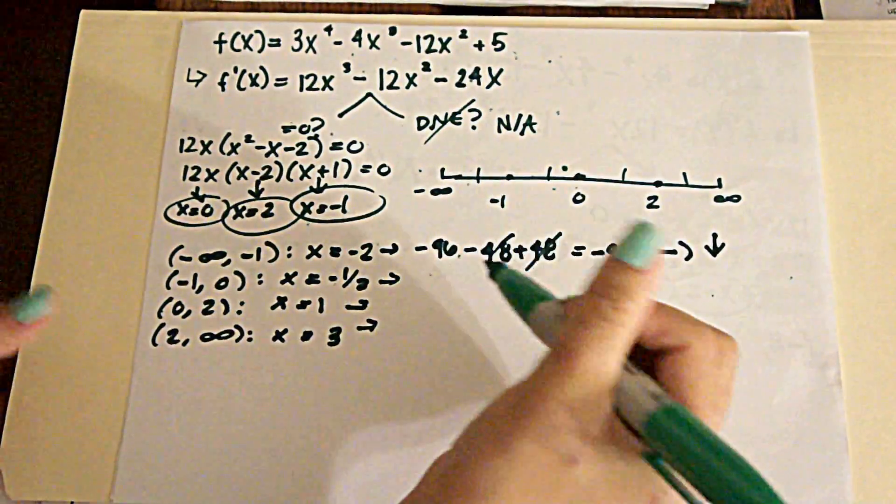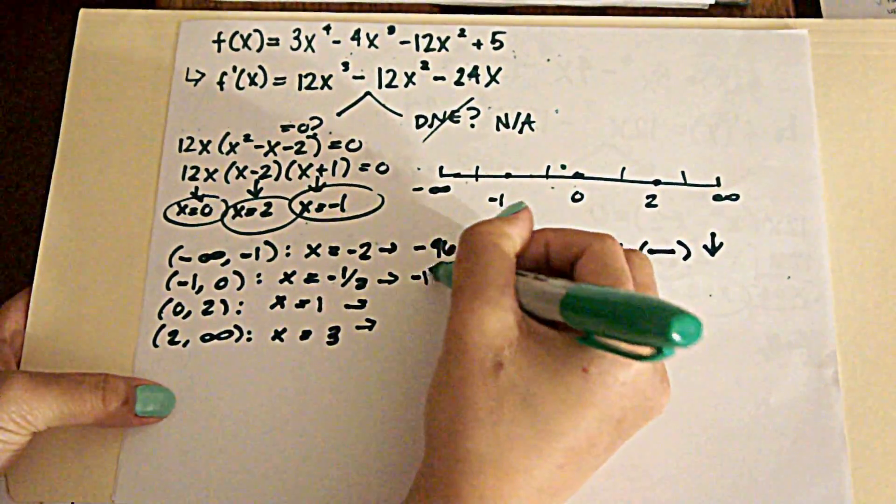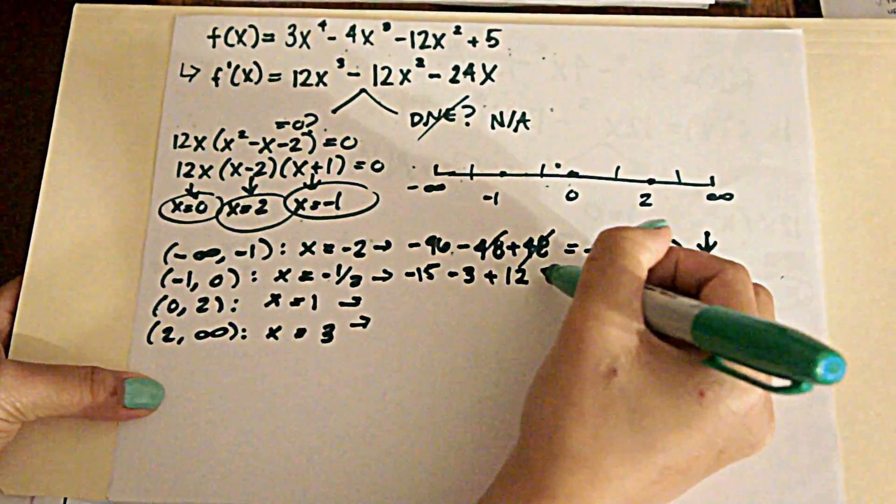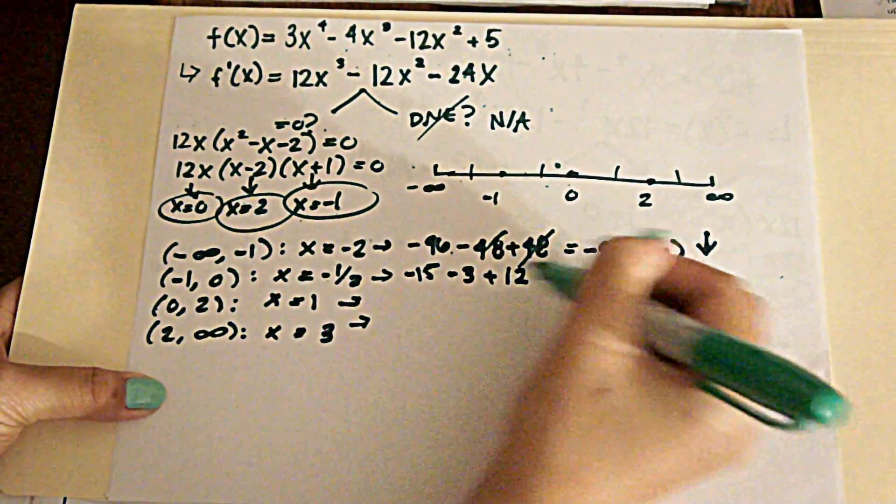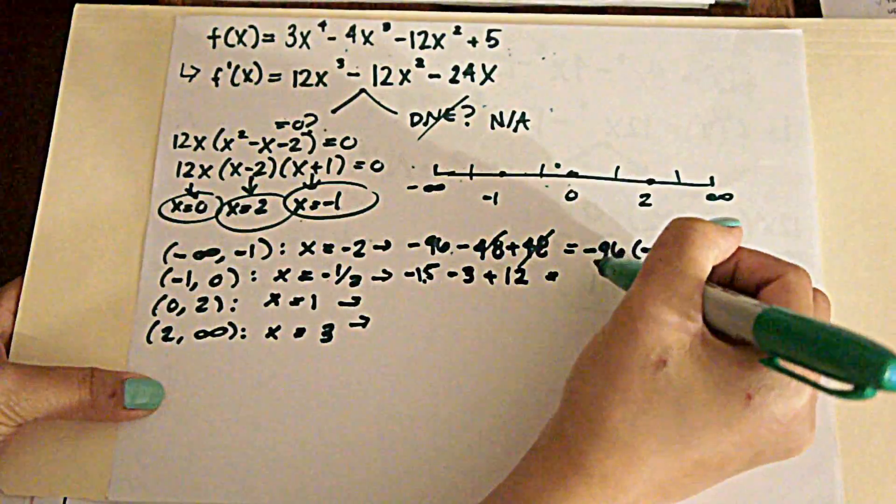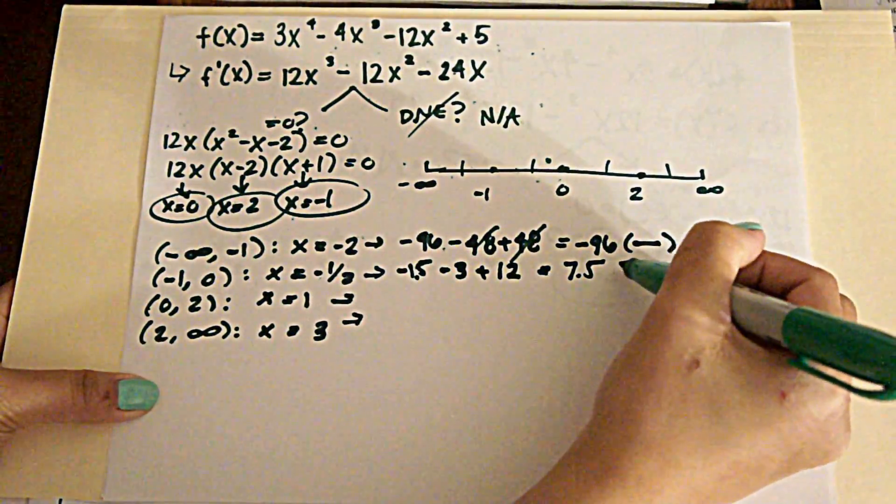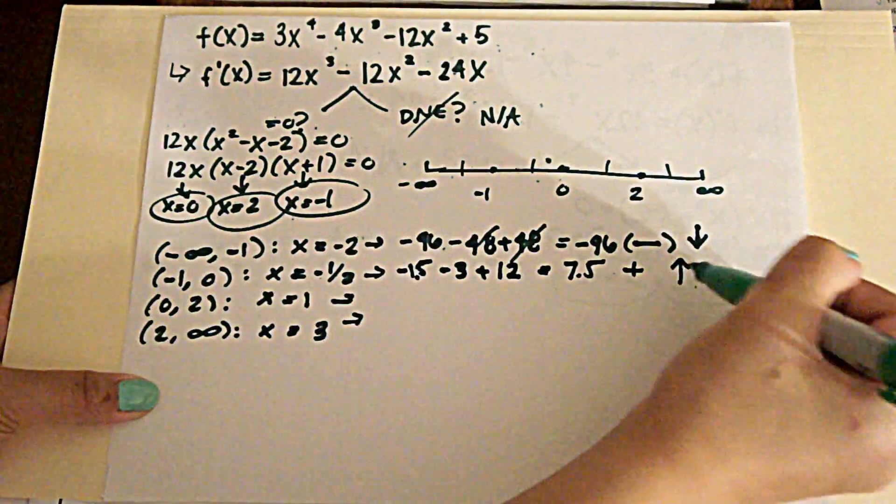Here we get negative 15 minus 3 plus 12 equals about 7 and a half. And that positive tells us that we are increasing.